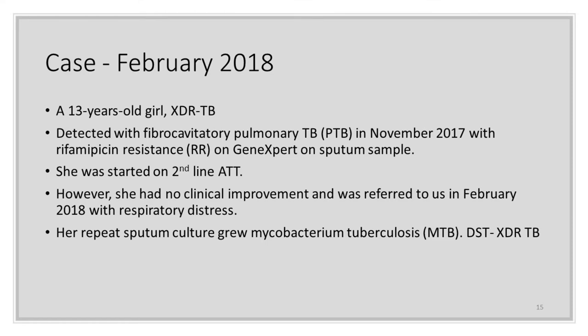MDR-TB treatment, though it looks simplified, is not that simple. A 13-year-old girl came to us in February 2018. She had been diagnosed with fibrocavitary pulmonary TB in November 2017 with rifampicin resistance on GeneXpert. She was started on the second-line Category 4 regimen prevalent at that time. She had no response and was in fact getting worse, so she was referred to us after four months in February 2018 with respiratory distress, and her culture grew MTB, with DST showing XDR.